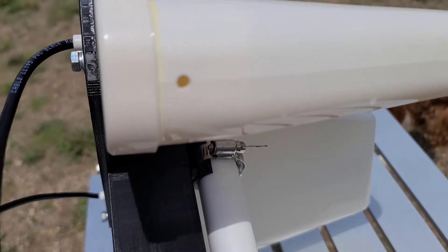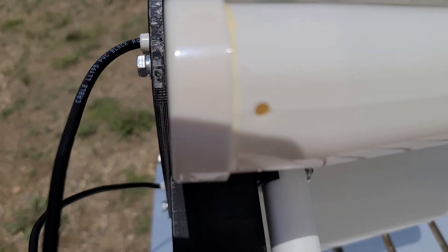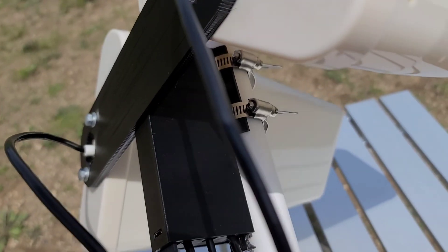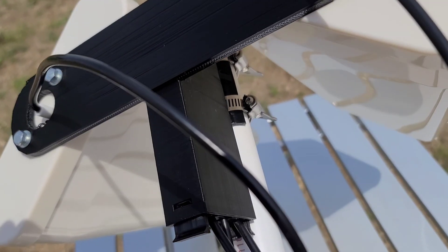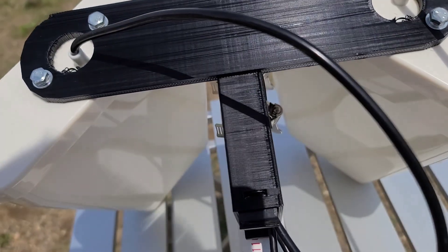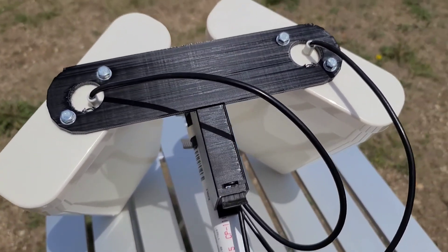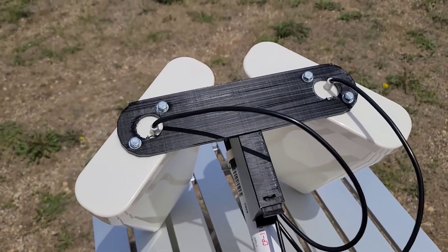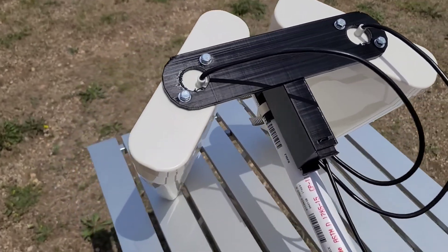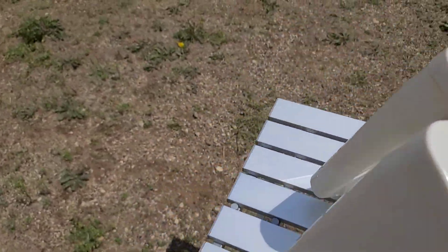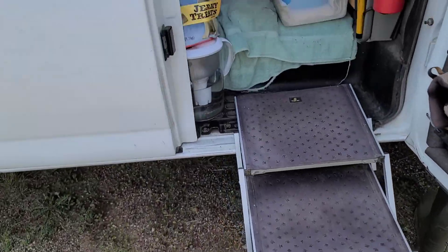It has these little weeping holes that are in the bottom of the antennas. The only thing when you mount it, you need to have those pointed downside so that if it rains you don't get water collected inside there.